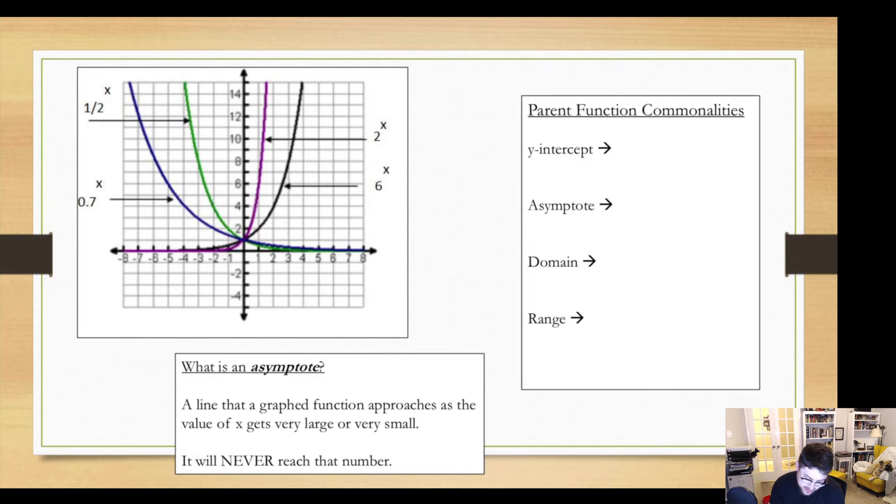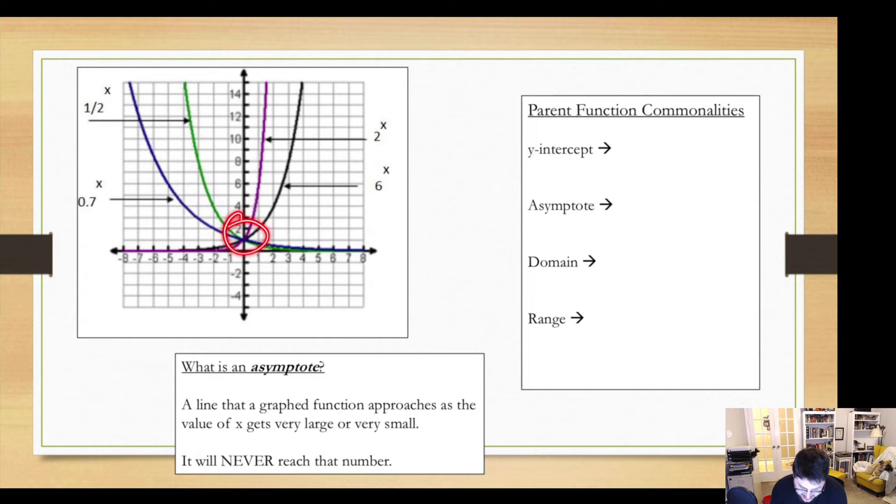So what do all these graphs have in common? Well first off, they all go through this point right here, zero comma one. And that's because anything to the power of zero equals one. So if we don't have any other changes to the function, it'll go through that point.